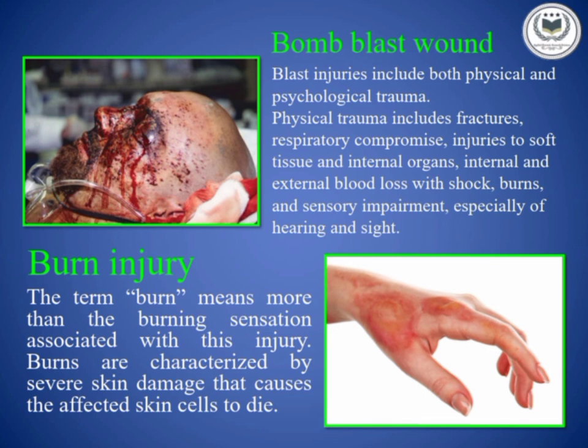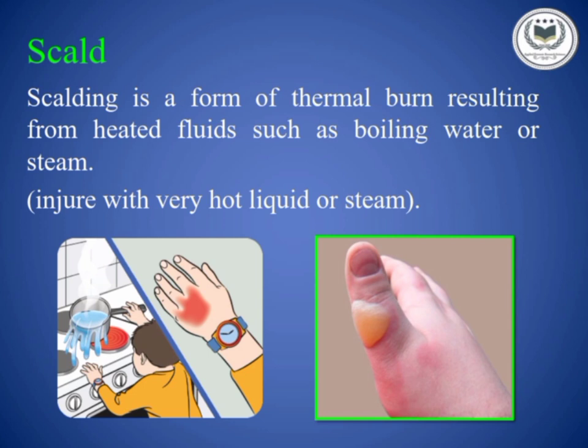Next is burn injury. A burn is an injury to the skin or other organic tissues primarily caused by heat, radiation, electricity, or chemicals. Scald is damage to the skin or deeper tissues caused by hot liquid, steam, fires, or chemicals. Scalds occur when burns are created by hot liquids like boiling water, steam, or cooking oil. These are generally first or second degree burns.